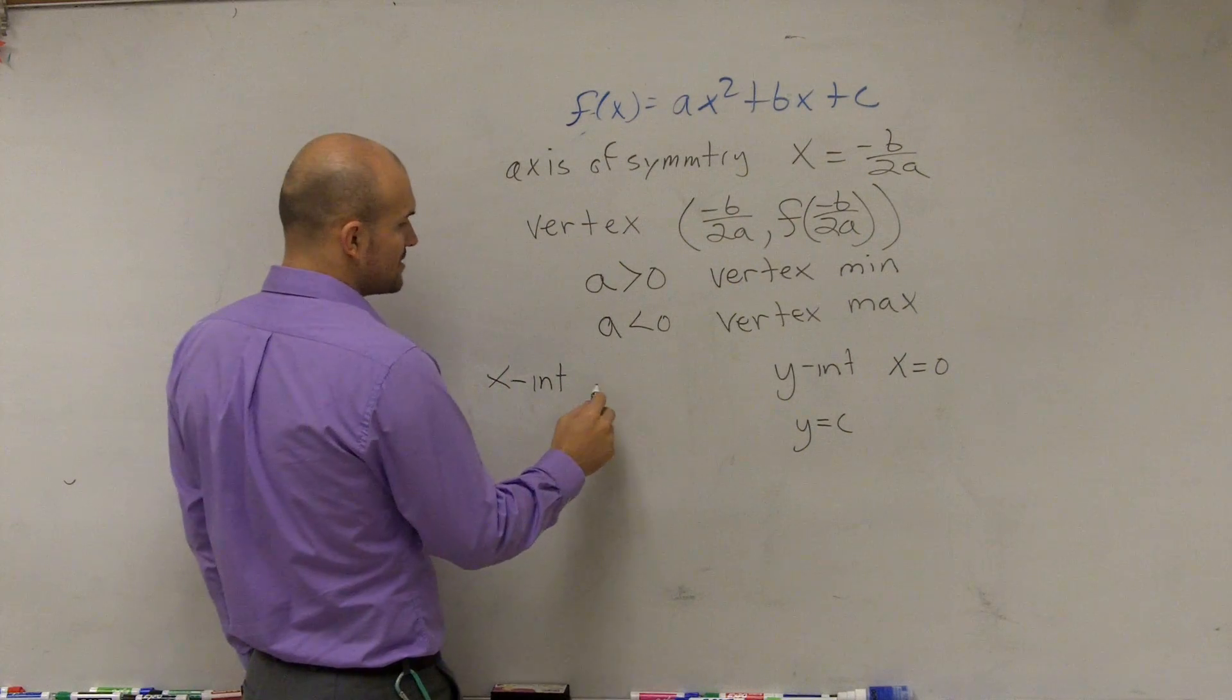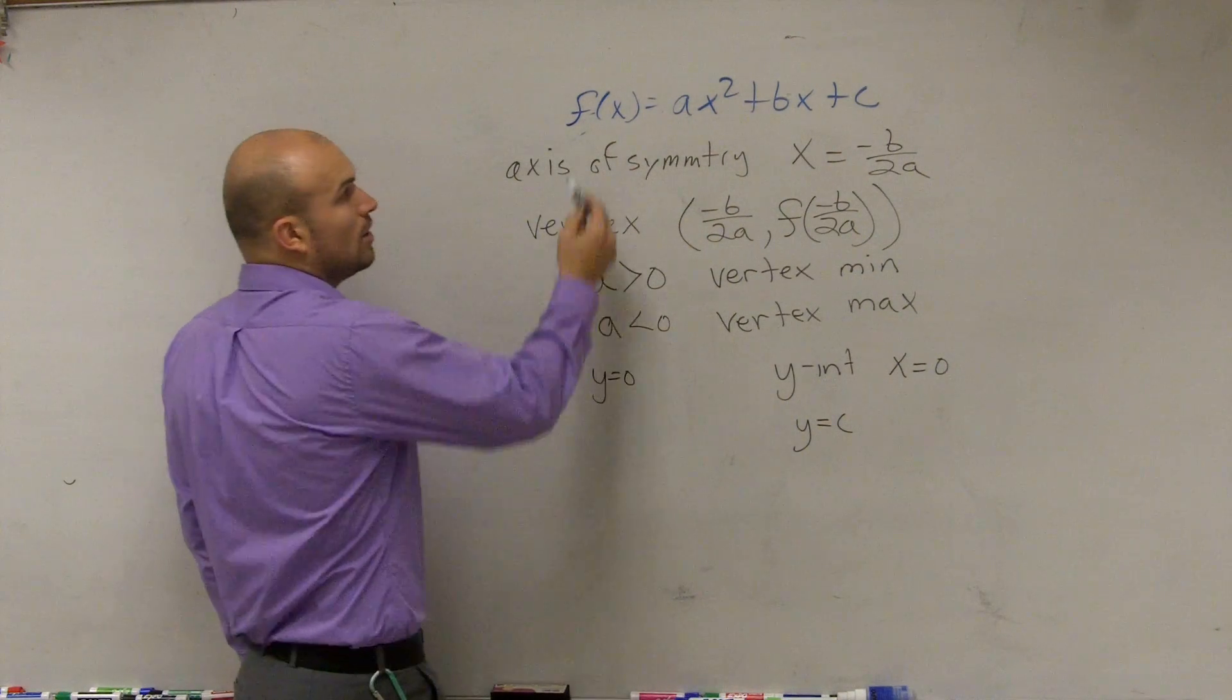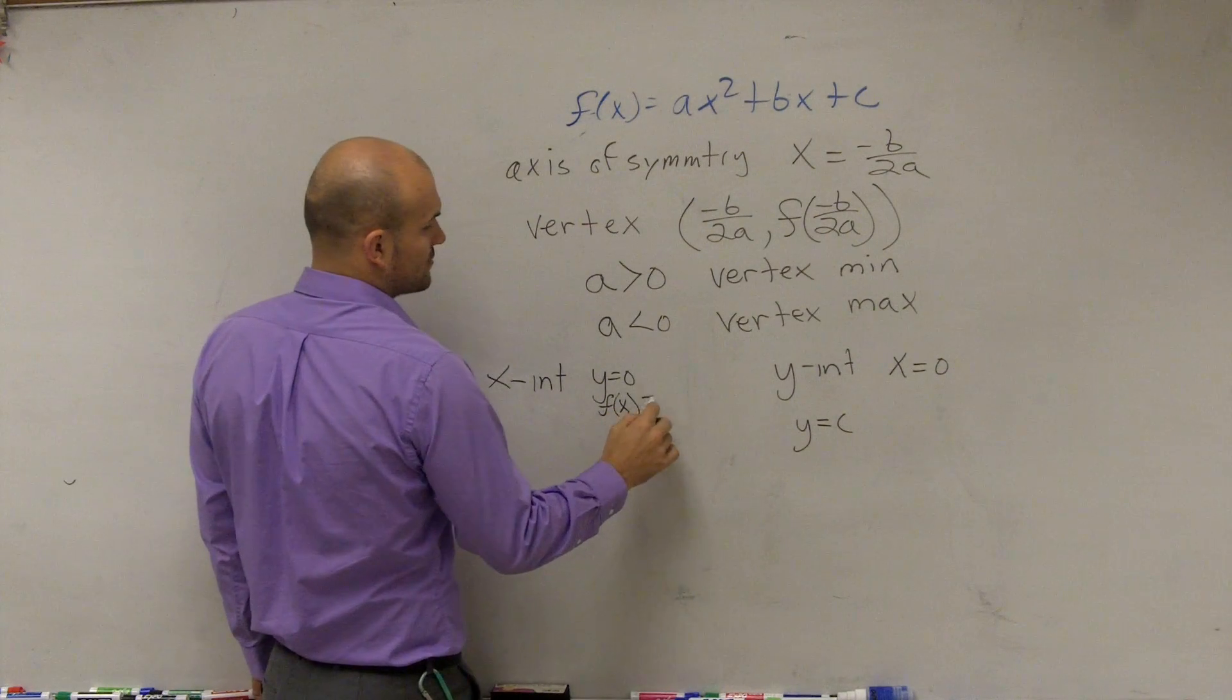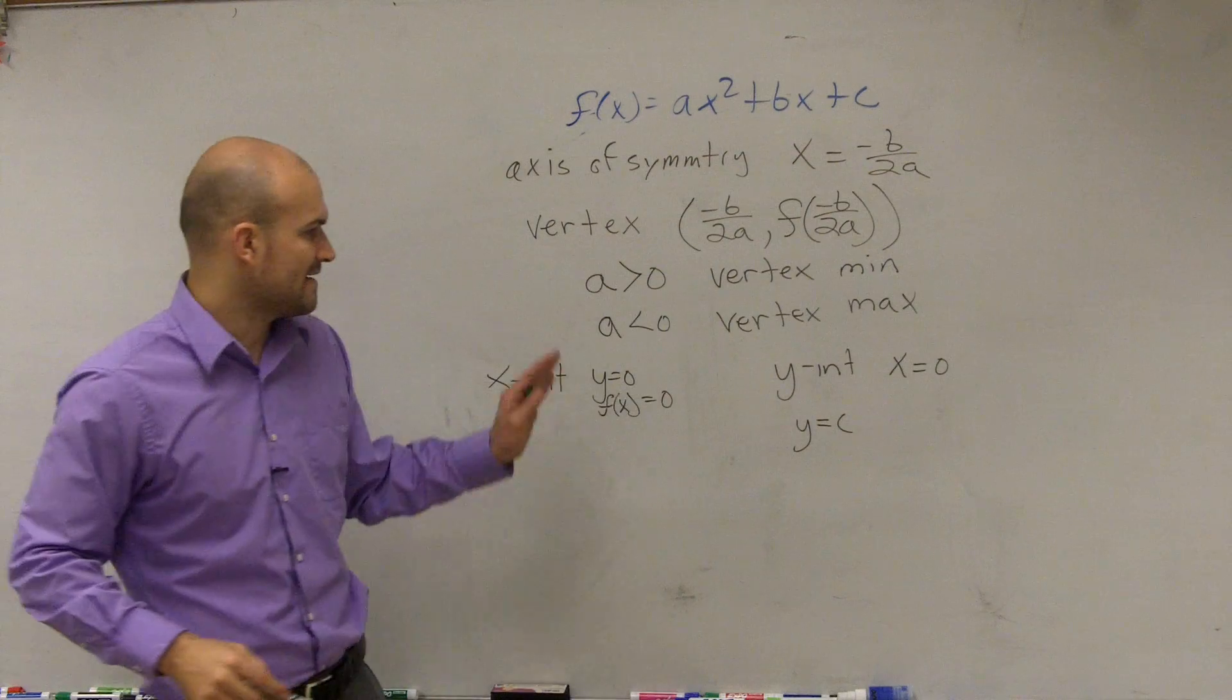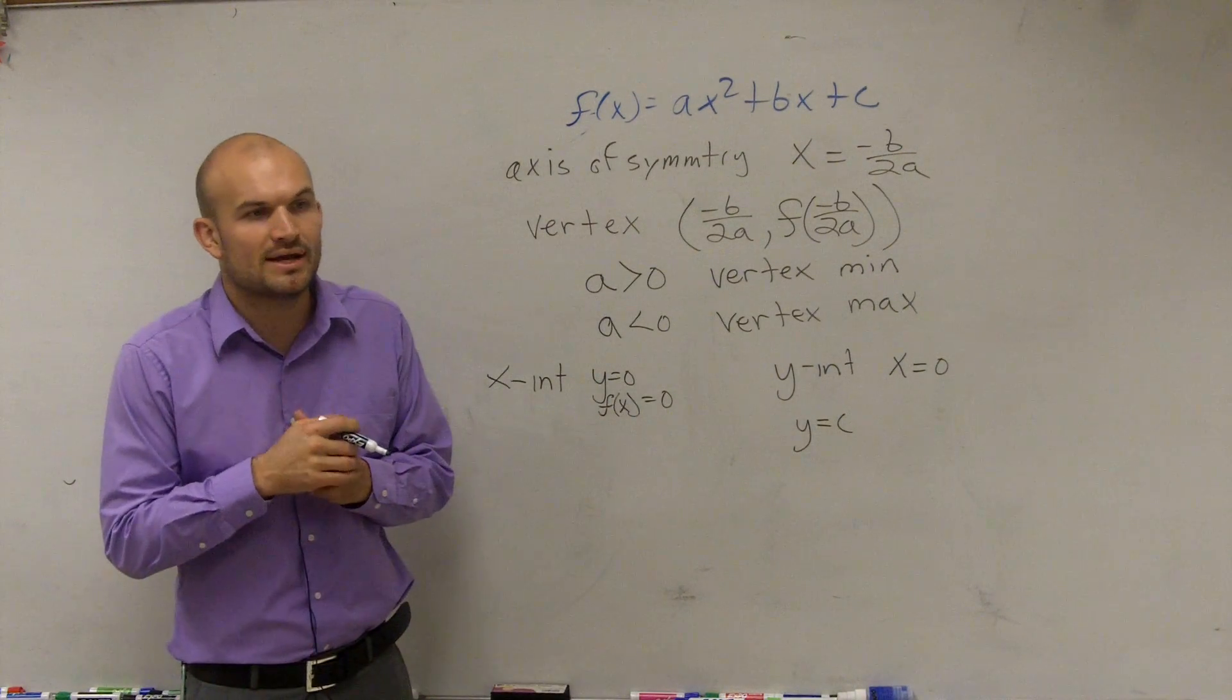Then we said find the x-intercepts. To find the x-intercepts, we said y equals 0. Or in function notation, you could say f of x equals 0. It really means the same thing. f of x is going to be your dependent variable.